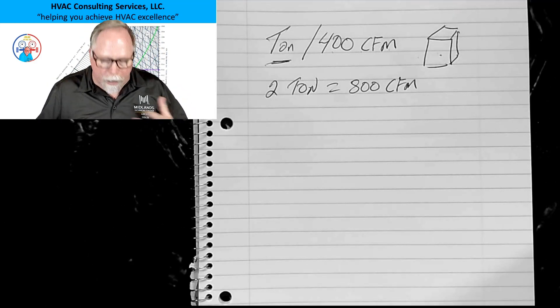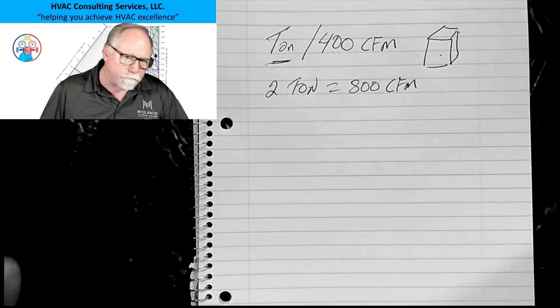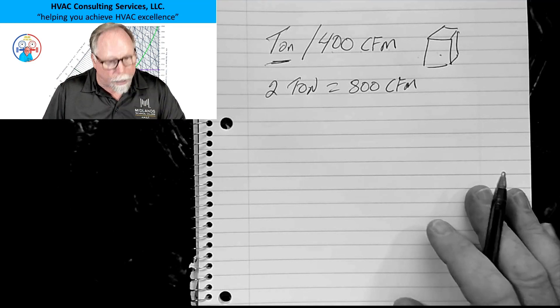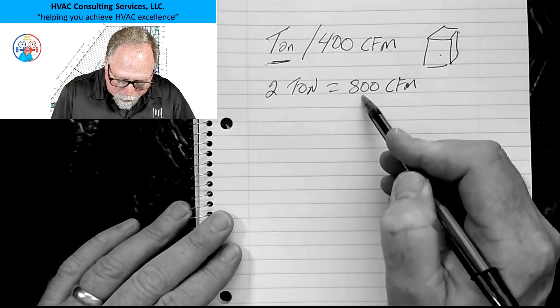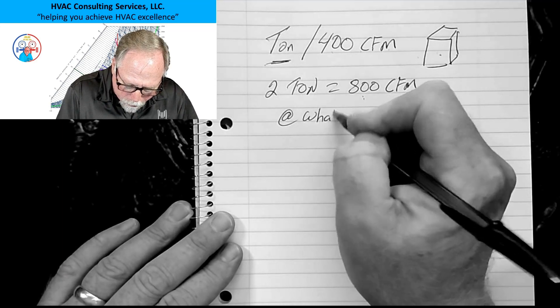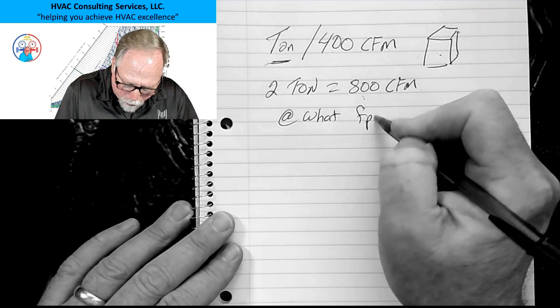400 cubic feet per minute of air would be like 400 gallons per minute of water. If you've got five gallons a minute coming out of a water hose, that's actually measuring the quantity of water at a given amount of time. So is this. Air is just a cube. We're saying we need 400 of those to go through the coil to get the right capacity, and that's per ton.